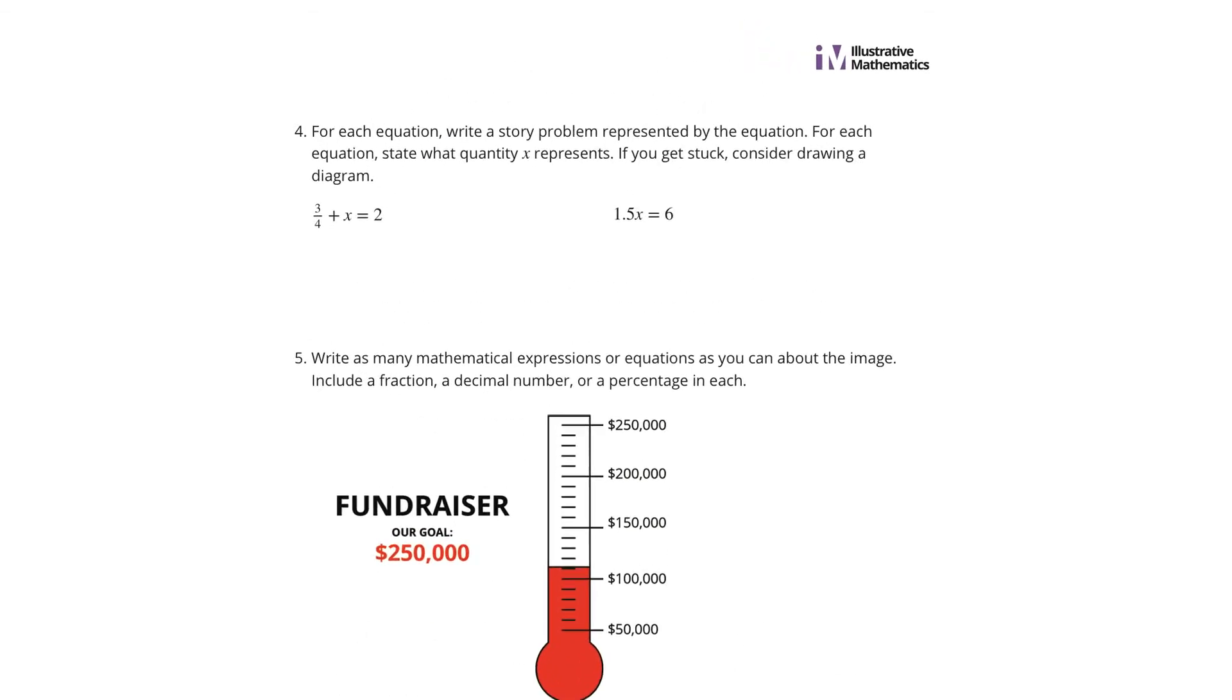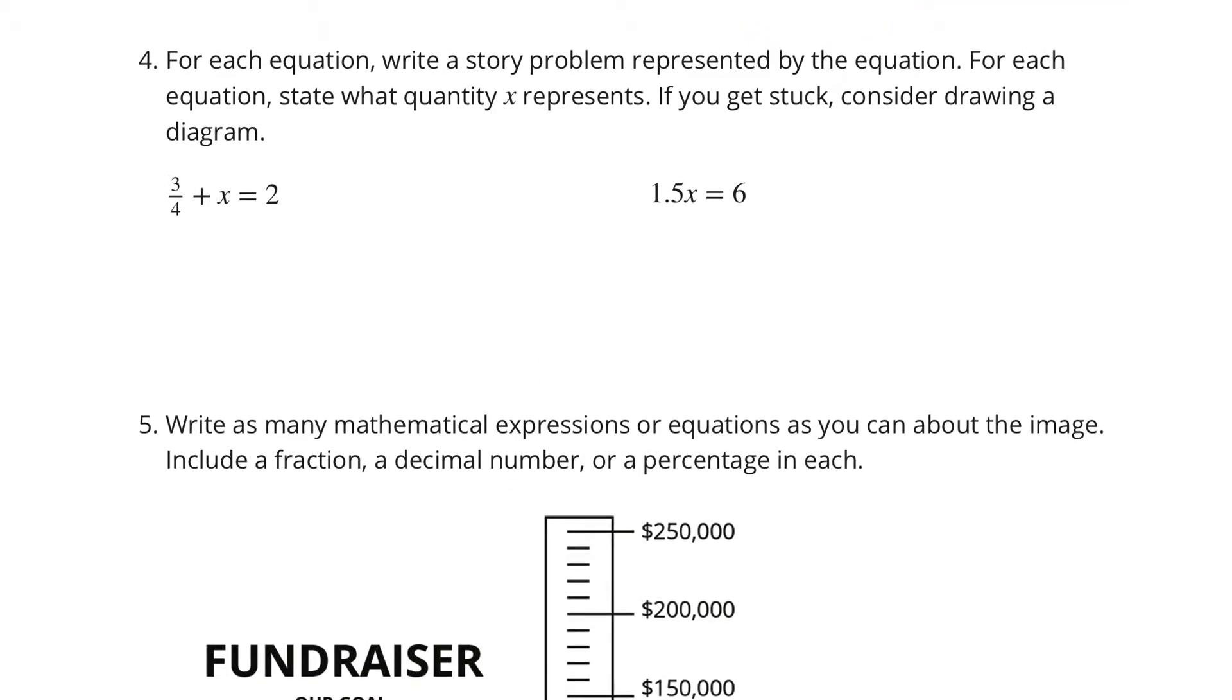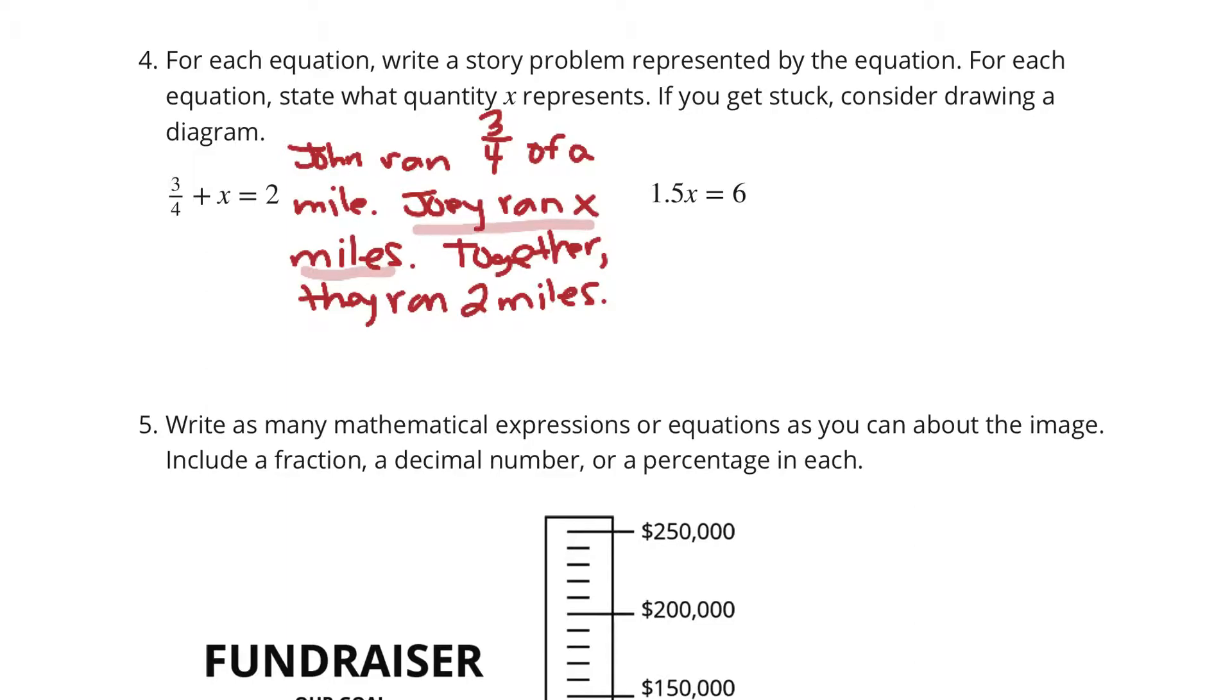Moving on to question 4. For each equation, write a story problem represented by the equation. For each equation, state what quantity x represents. If you get stuck, consider drawing a diagram. We have 3/4 plus x equals 2. In this question, I wrote, John ran 3/4 of a mile. Joey ran x miles. Together, they ran 2 miles. And so if you're looking for what x represents, it's the number of miles that Joey ran.